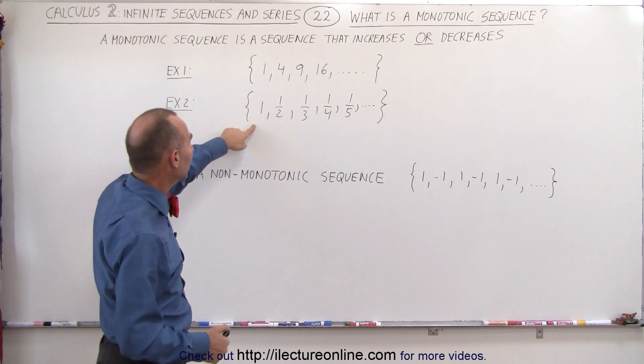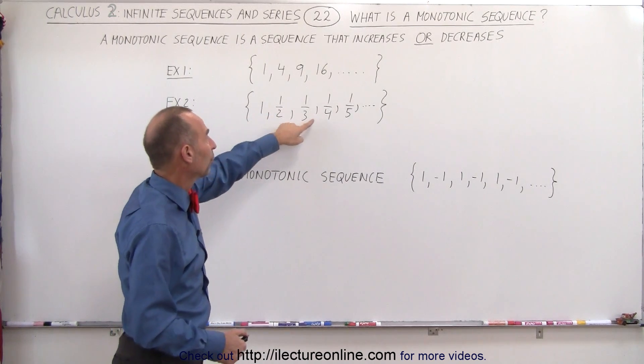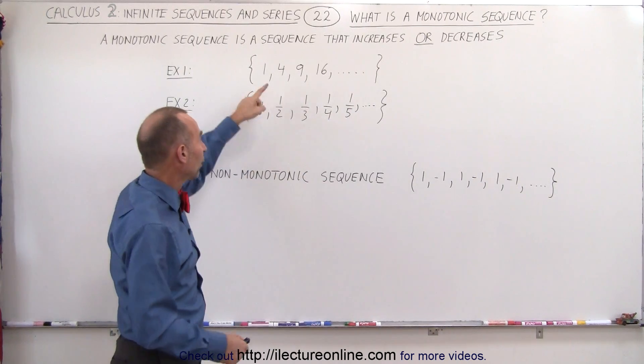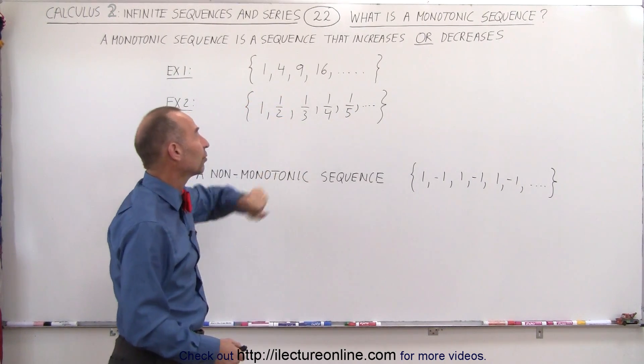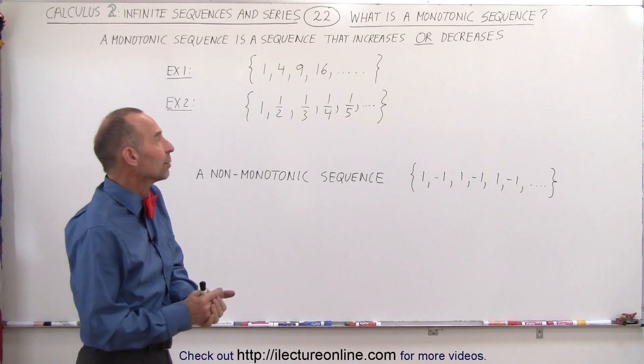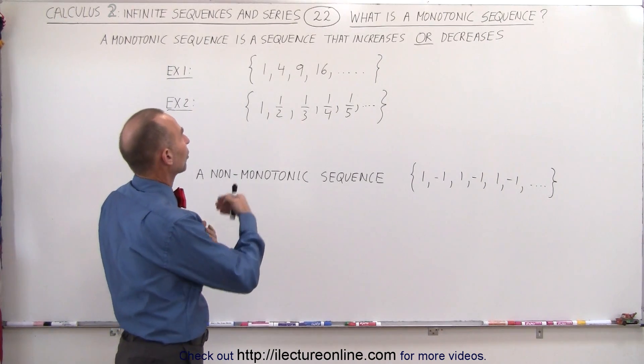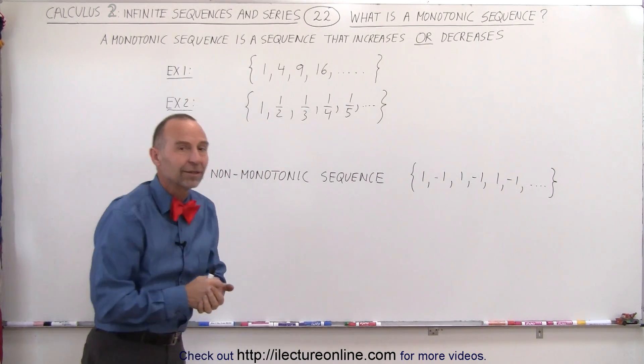Or in this case we have 1, 1 half, 1 third, 1 fourth, 1 fifth. So it's 1 divided by 1, 1 divided by 2, 1 divided by 3, and so forth. That's a decreasing sequence. Both of those sequences are considered monotonic sequences.